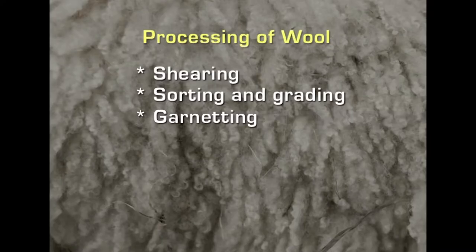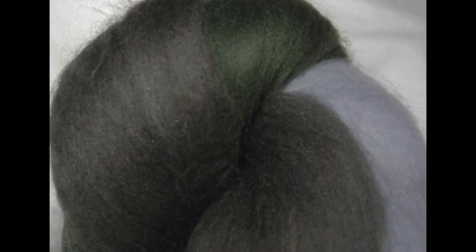Once sorting is done, they are baled up and then go for the next process called the garneting process. In the garneting process, used and unused wool materials are shredded and then made into a fibrous form. They are also given a carbonizing treatment to remove any vegetable matter present. The final fiber obtained from garneting can be 5 times costlier than natural wool fiber because of the processing and cleaning it undergoes.